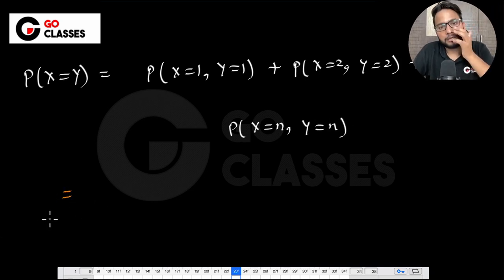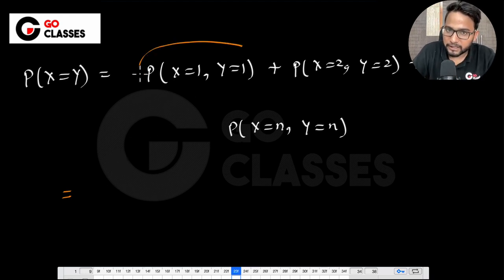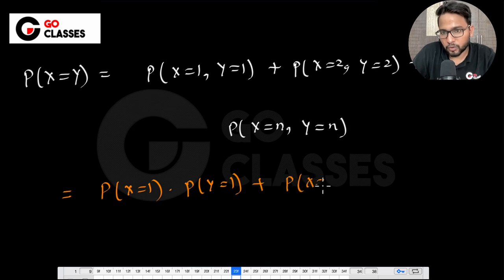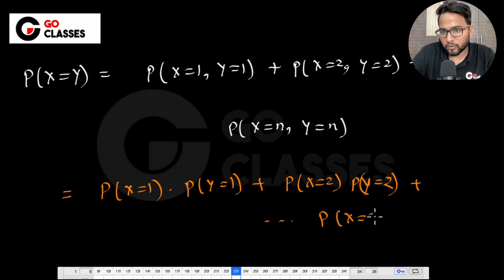Using the independence of X and Y, we can factor each joint probability: P(X=Y) = P(X=1)·P(Y=1) + P(X=2)·P(Y=2) + ... + P(X=n)·P(Y=n).